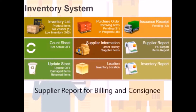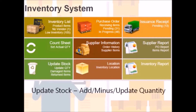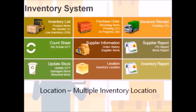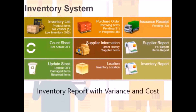Supplier information contains the list and details of suppliers entered. Supplier report is used for billing items and consignee reports. Update stock lets the user add or subtract item quantities — this is especially used for updating quantities regarding returned and damaged items. Location lists all branches and stores for tagging where items are stored. Inventory report is used for quick report generation for variances and cost.